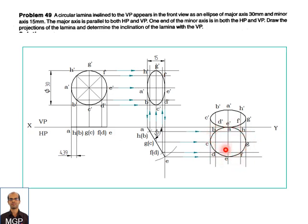This is the view when the circular lamina appears as an ellipse in the front view, the major axis is parallel to HP, and one end of the minor axis is on both the reference planes. Thank you.